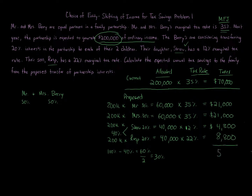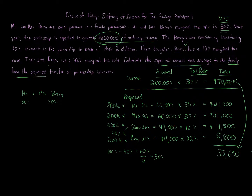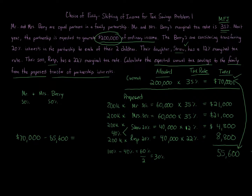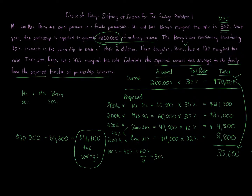Totaling all amounts under the proposed structure, the family pays $55,600 in taxes. Compare that to $70,000 under the old 50/50 structure. Taking $70,000 minus $55,600, we get $14,400 in annual tax savings under the proposed plan.